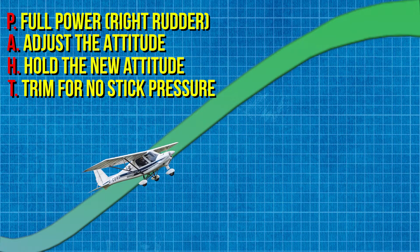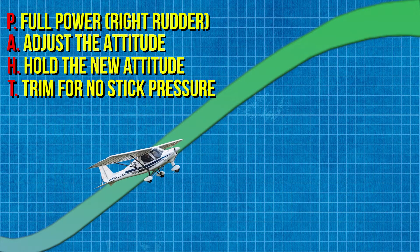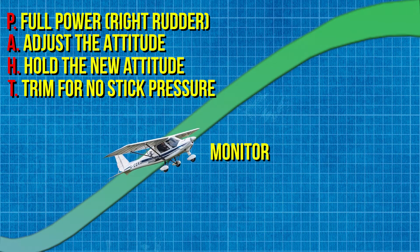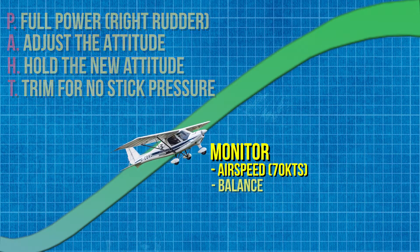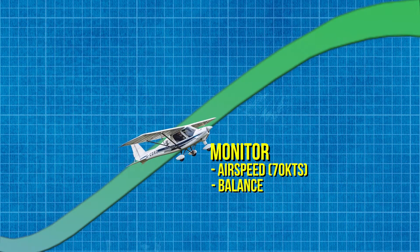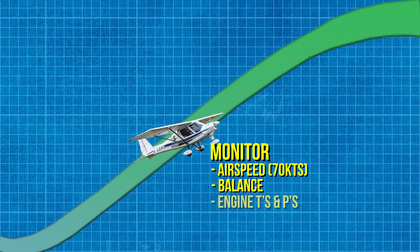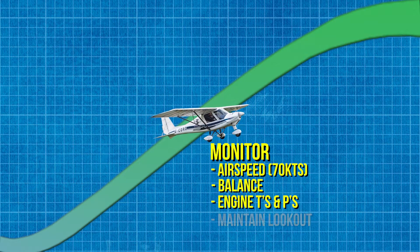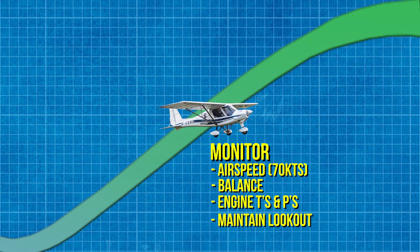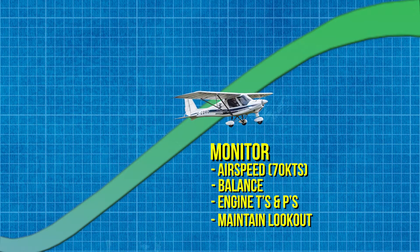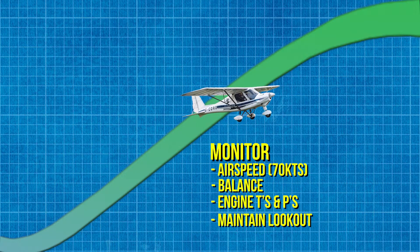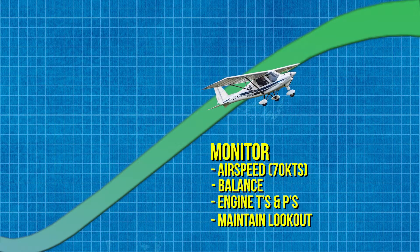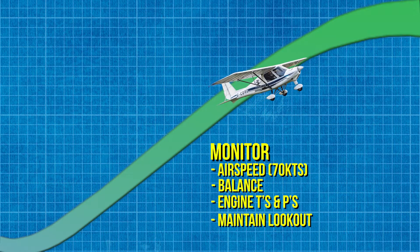Once we are in a stable climb, we will need to monitor a few things: our airspeed, balance, and our engine temperatures and pressures. Every few hundred feet we will lower the nose to look out for traffic. Once this is done, we will raise the nose and return into our climbing attitude.